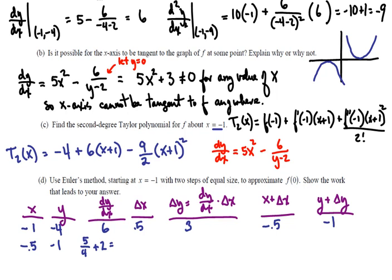So 5 fourths plus 8 fourths will give us 13 fourths. Our delta x is still 1 half. We multiply the two together, we're going to get 13 eighths.